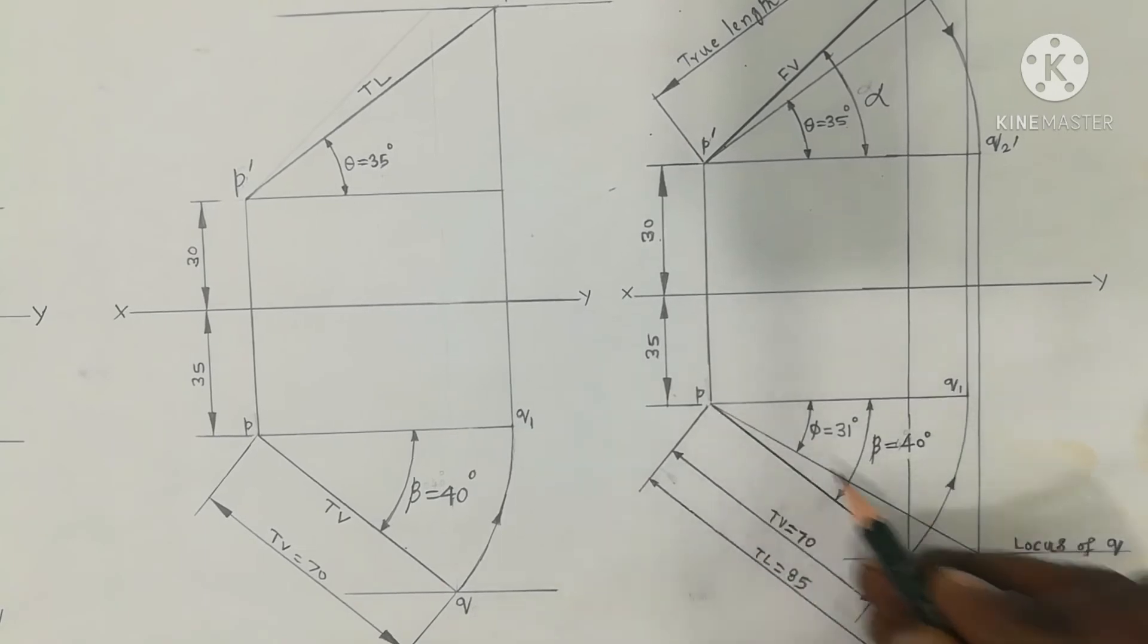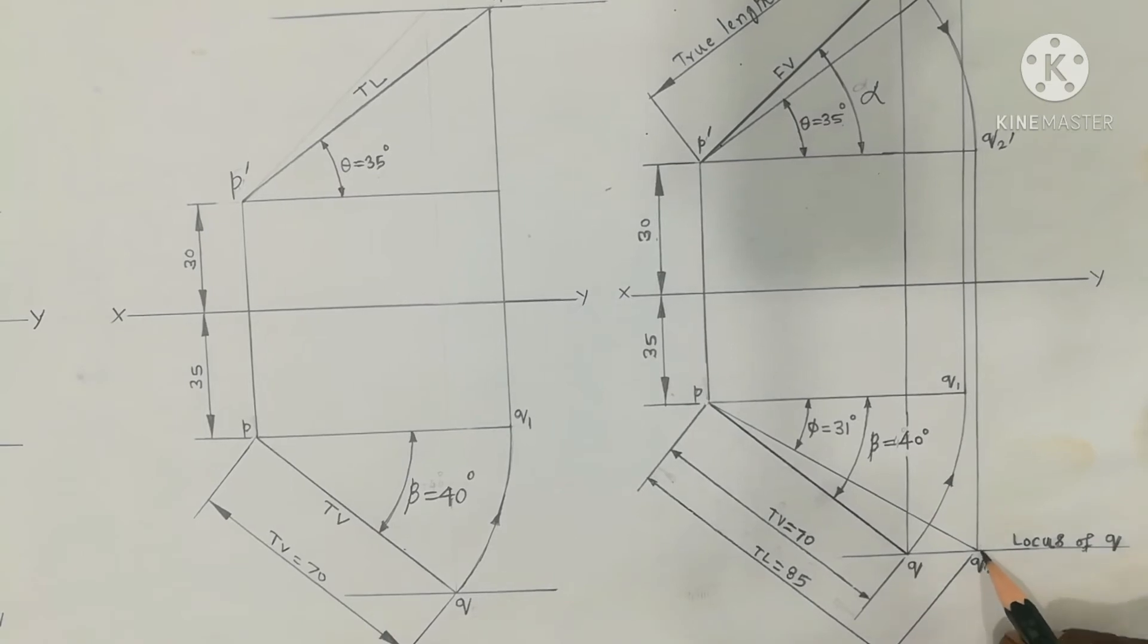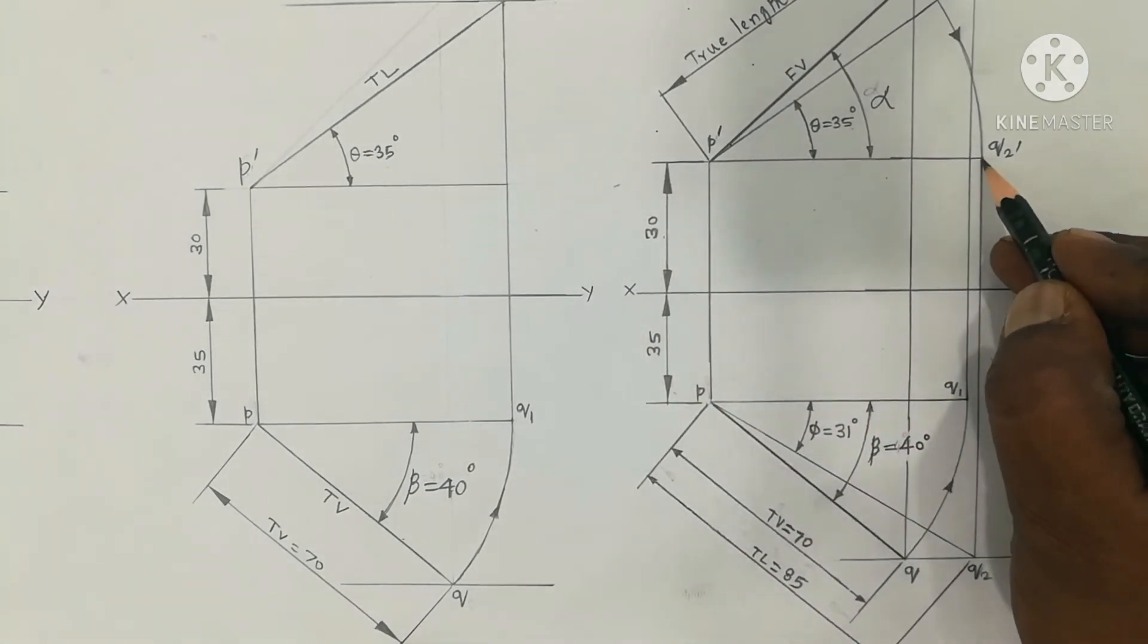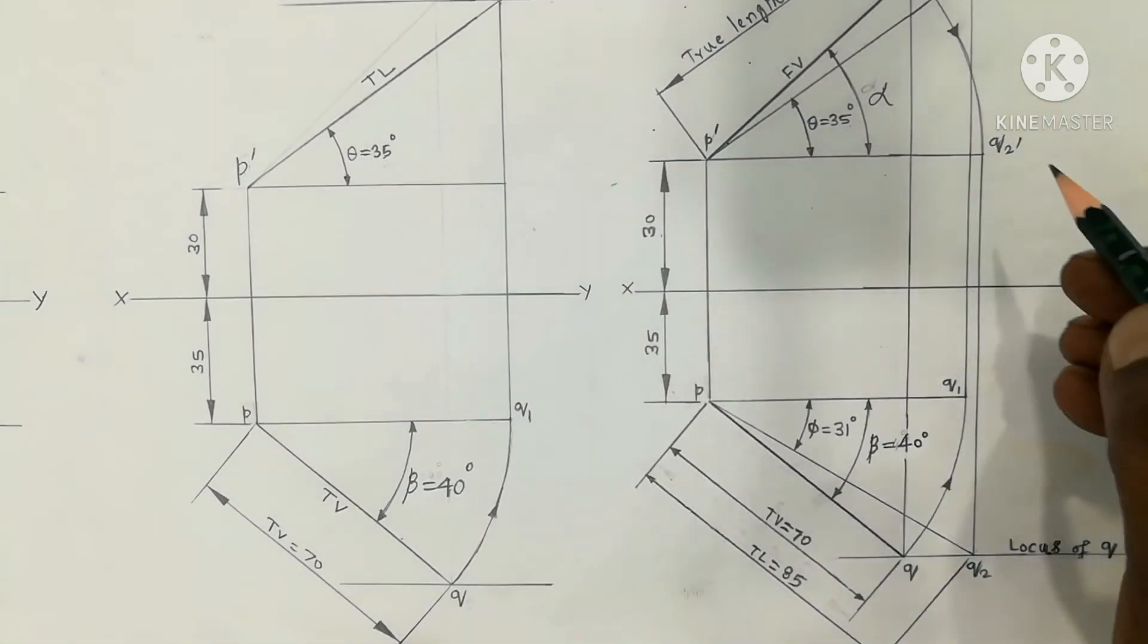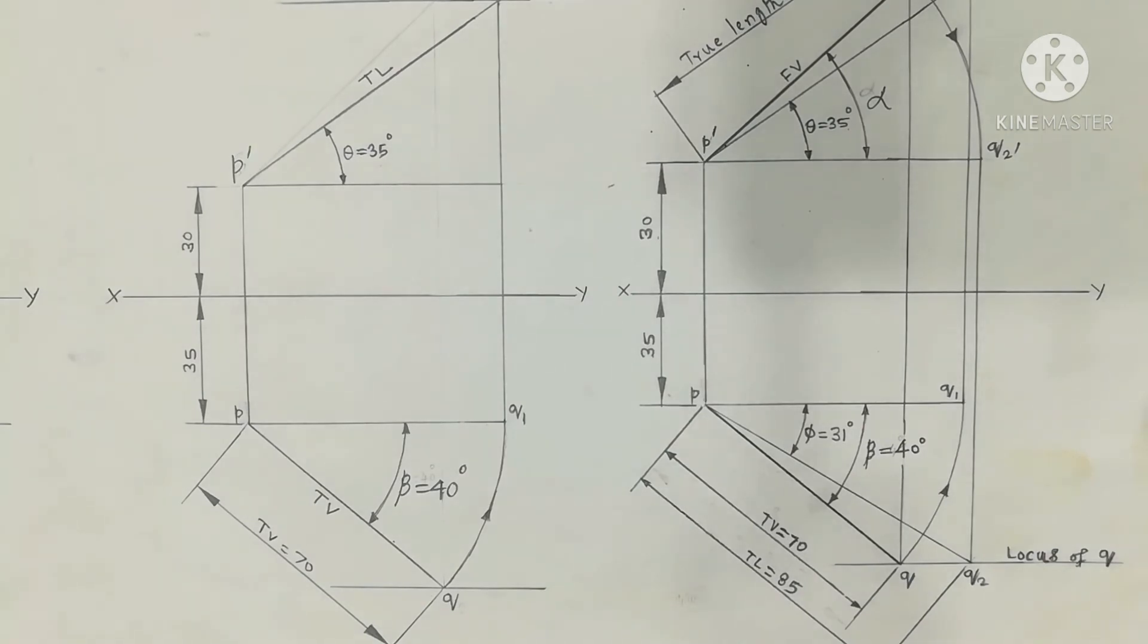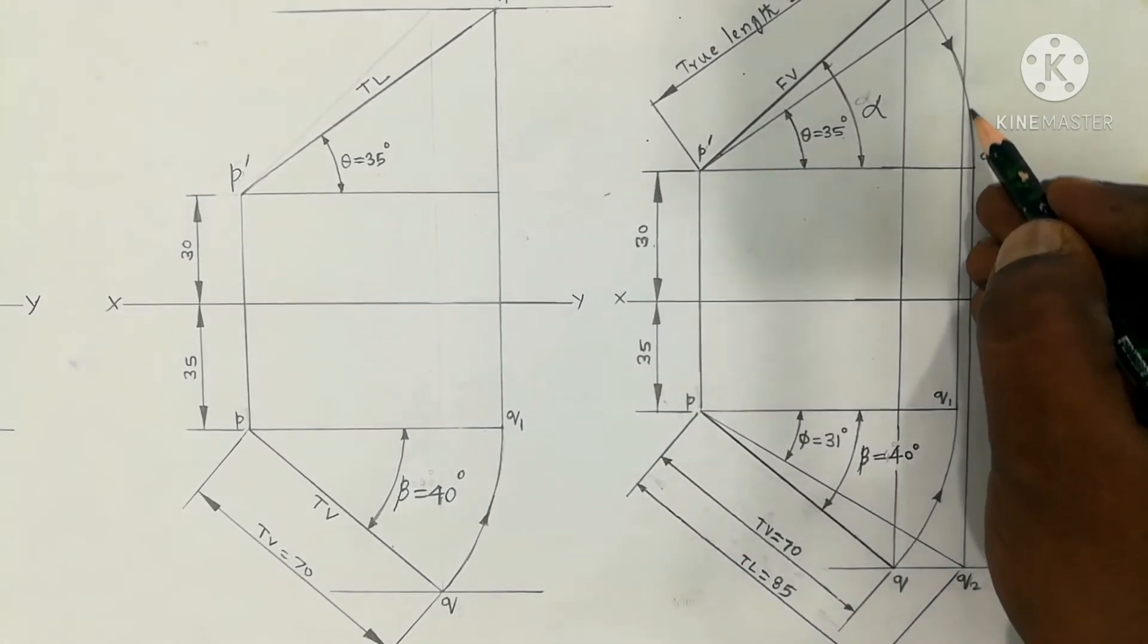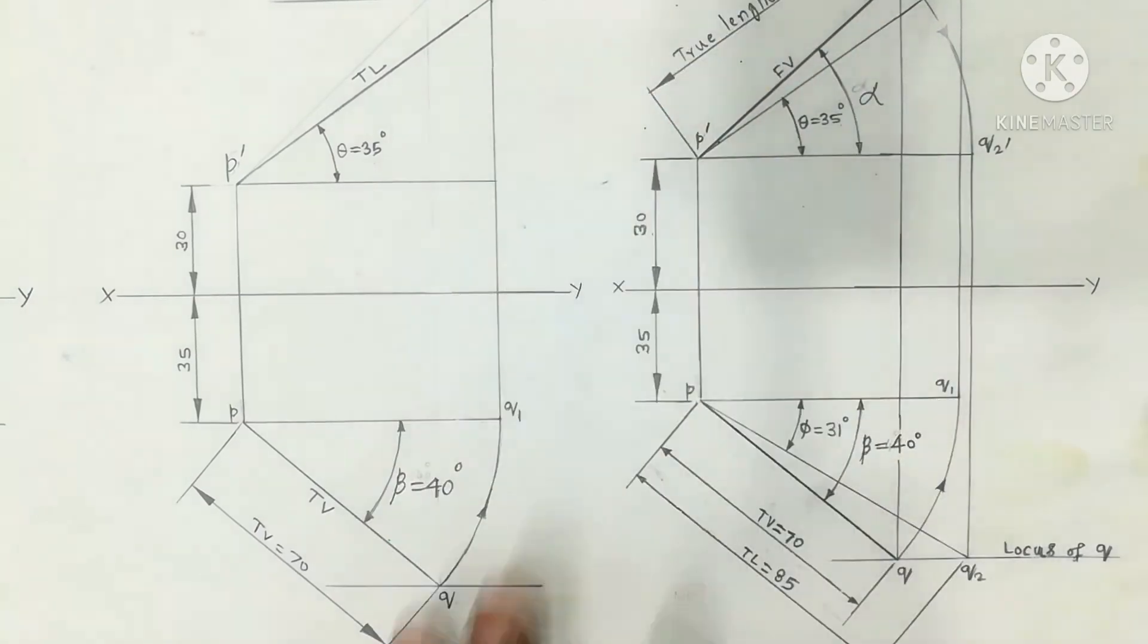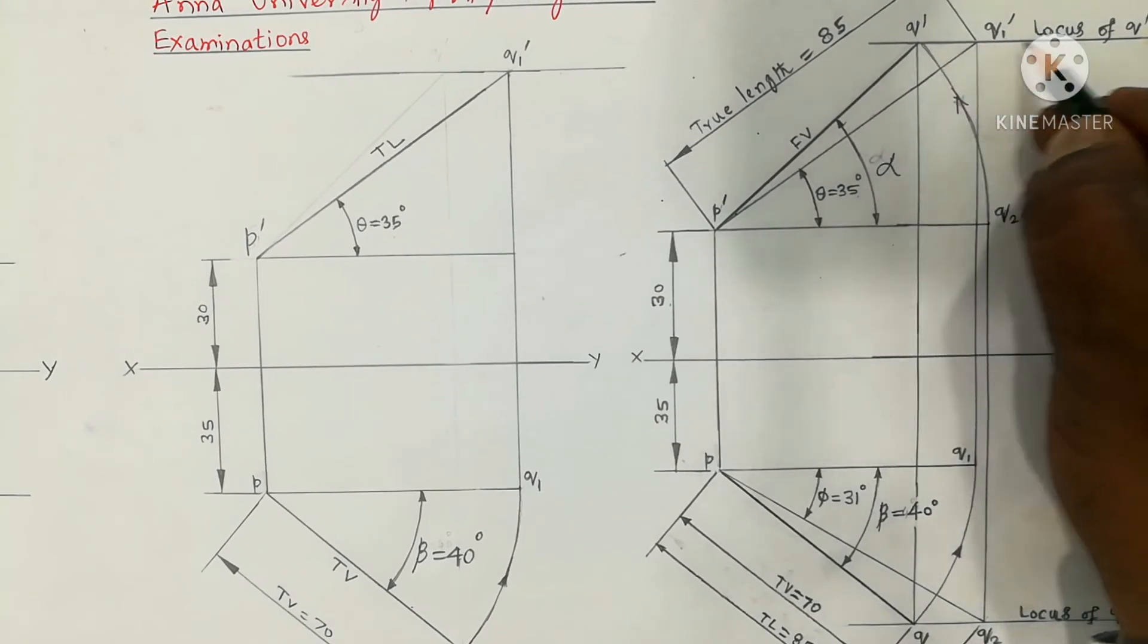P dash Q2 dash as radius, draw an arc upward. In the arrow mark, the arc, the locus line passing through Q1 dash, Q1 dash meet point. Locus line meet point.